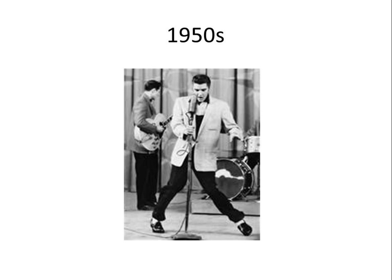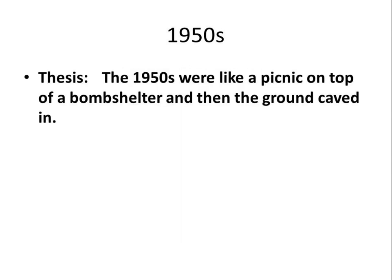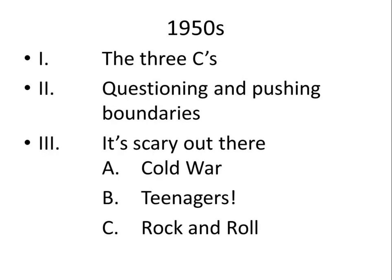This week we're going to be doing one of my favorite topics: the 1950s. As you can see — Elvis — we all know who Elvis is. The thesis is: the 50s were like a picnic on top of a bomb shelter, and then the ground caved in. We're going to be talking about how the 50s looked really nice on the outside but there was actually a lot going on underneath, such as the Cold War and rebellion starting up.